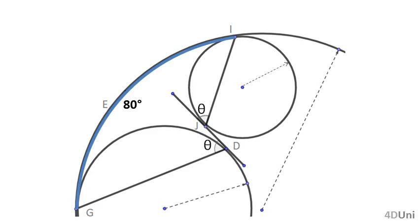Let's name the circumferences C1, C2, and C3 as shown. The fact that there are points of tangency indicates tangent curves in the figure. G is a point of tangency, so circumference C1 is tangent to circumference C3. D is a point of tangency, so the straight line JD is tangent to circumference C1. J is a point of tangency, so the straight line JD is tangent to circumference C2. I is a point of tangency, so circumference C3 is tangent to circumference C2.